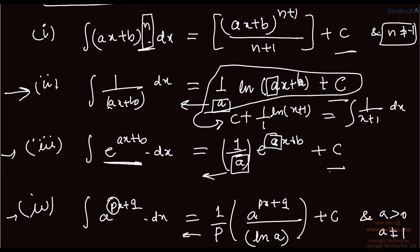If a equals 1, then 1 to the power of something is 1, so the integral of dx is just x. Now we move on to the fifth formula, which is the sine term — we are going into trigonometric ratios.